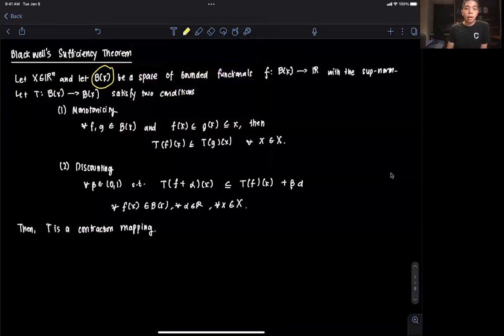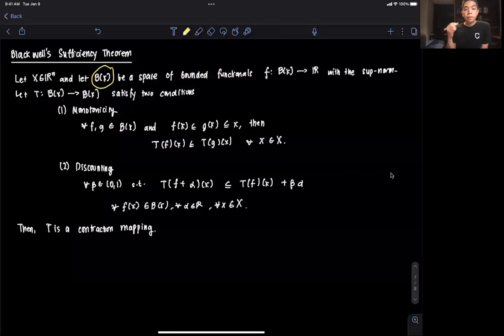Then if we define some operator T which maps from the set of bounded functionals to that same space, it must satisfy two conditions. The first is monotonicity, which states that for any two bounded functionals in the set, say f and g...